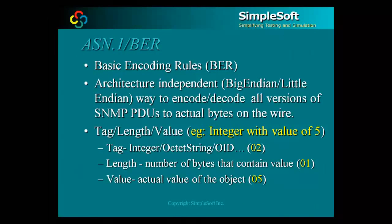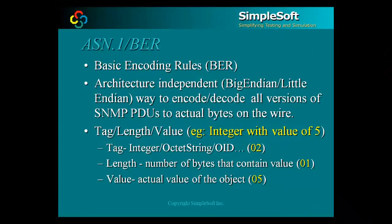To encode the SNMP message structure as actual bits on the wire, SNMP uses a subset of the Basic Encoding Rules that are also part of the ASN.1, or Abstract Syntax Notation 1, specification. Each field in the packet is encoded in three parts: tag, length, and value. Tag specifies the data type of the field, length indicates the length of the value field that follows, and value specifies the actual value of the field. As shown in the example, an integer with a value of 5 would be encoded as 02 01 05.